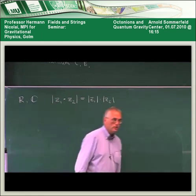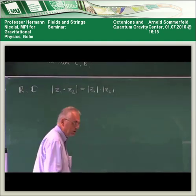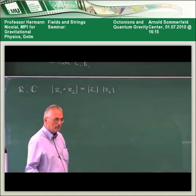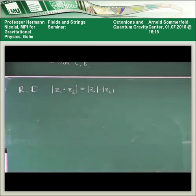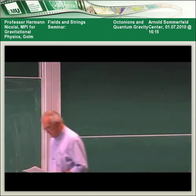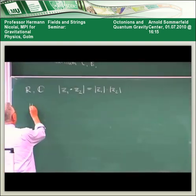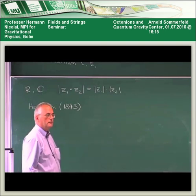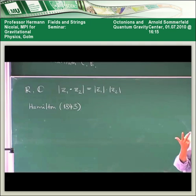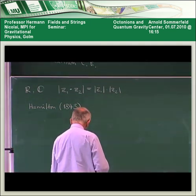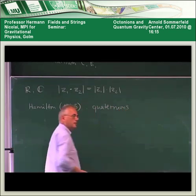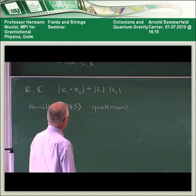Complex numbers were essentially invented and developed by Gauss in the early 19th century. People started asking themselves: are there generalizations? Are there hyper-complex systems? They tried by adding another imaginary unit but it didn't work out until Hamilton in 1843 realized that in order to make it work, he needed to introduce three imaginary units. When he had this inspiration, he carved these equations into a bridge in Dublin, and I think there's a plaque commemorating this event.